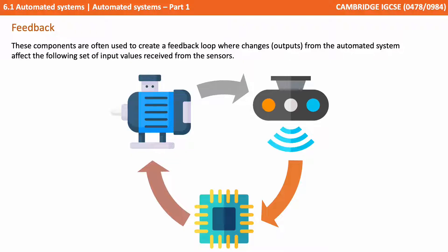These components can often be used to create a feedback loop where the changes — the outputs from the automated system — affect the following set of inputs received from the sensors.